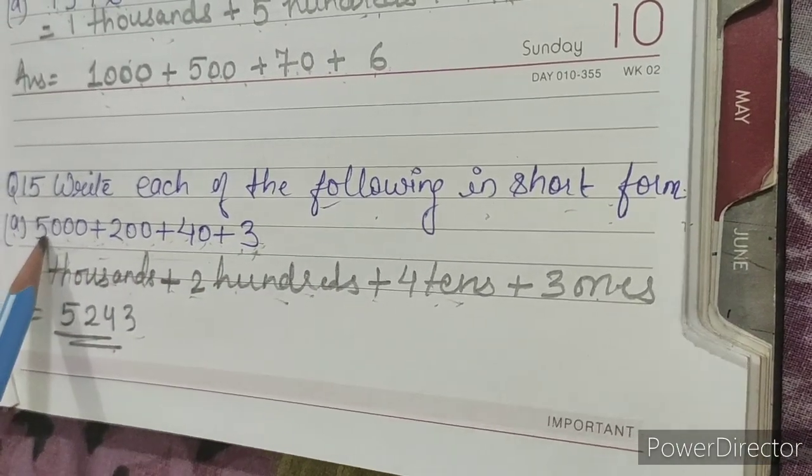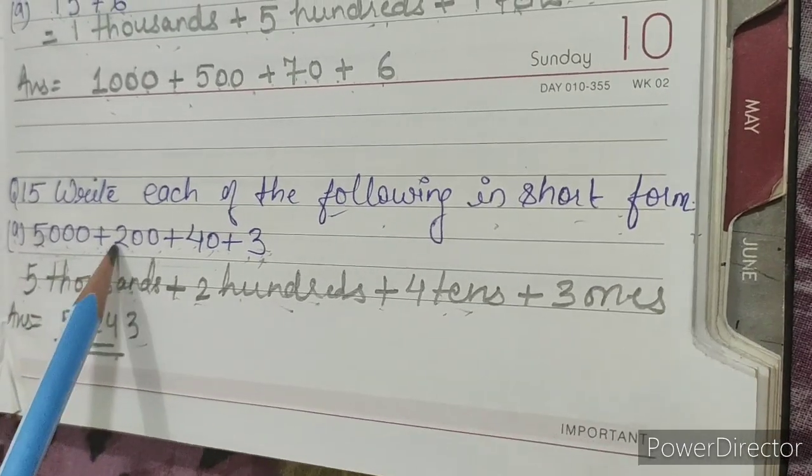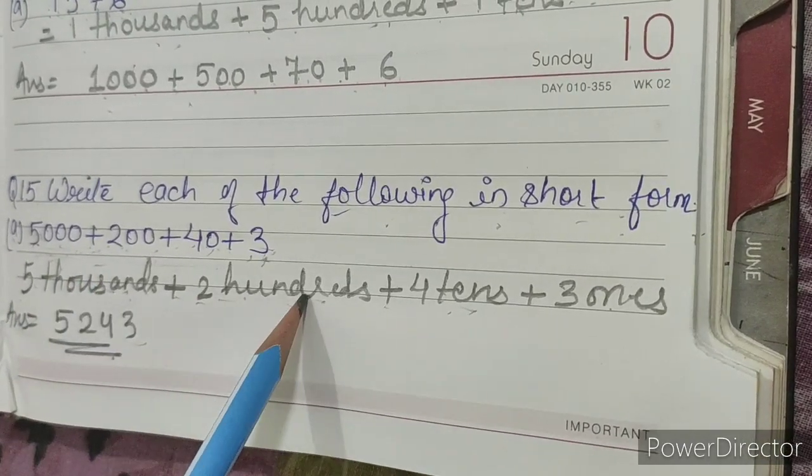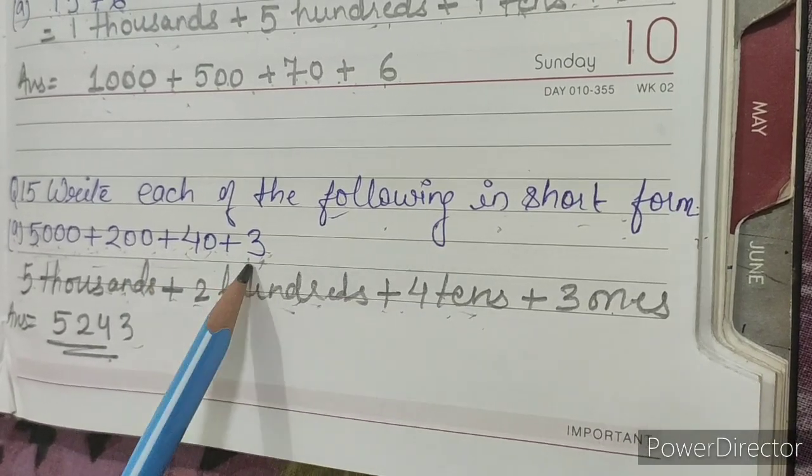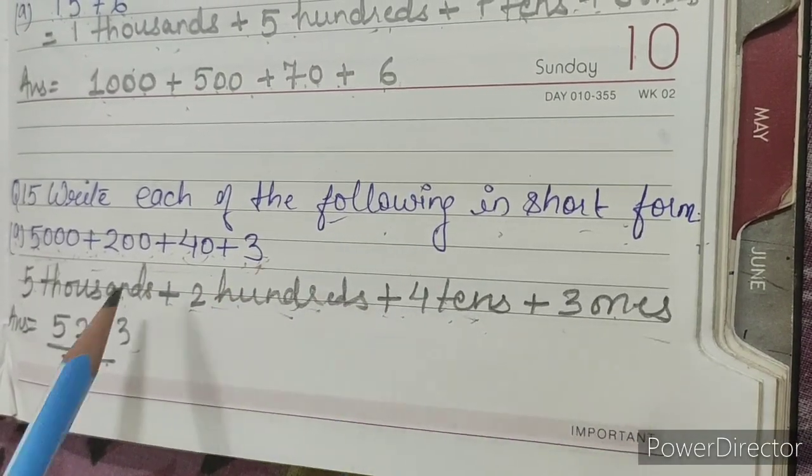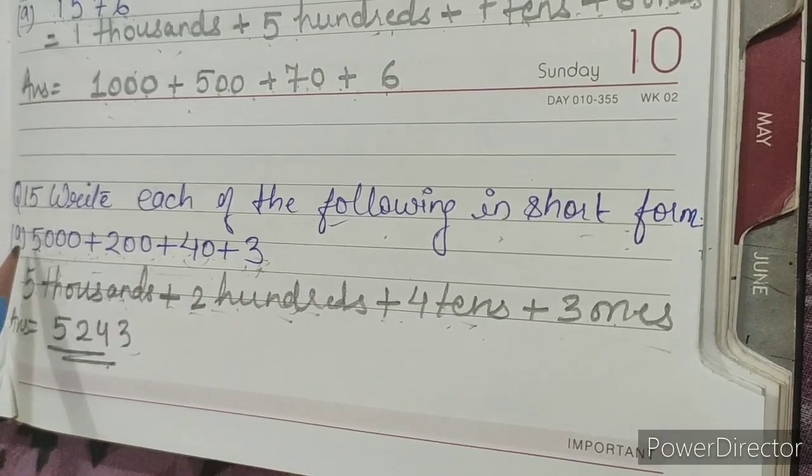The place value of 5 is five thousand, the place value of 2 is two hundred, the place value of 4 is four tens, and the place value of 3 is three ones. We have to write in short form, so we will write like this.